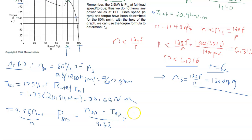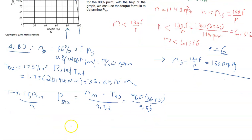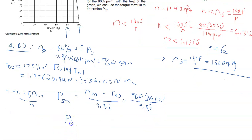So that is equal to 960 RPMs, the 36.65 Nm, divided by the constant 9.55. The power produced at breakdown will be equal to 3684 watts.